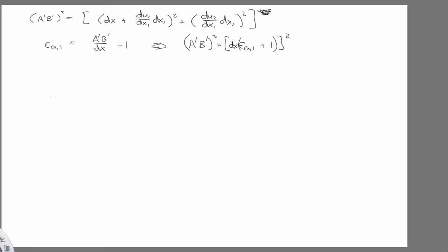And then square both sides. So now I have an equation. So plugging in a prime b prime squared here, plugging in this one here. Then I have an equation I can write down, and I'm going to expand it. So I have dx1 squared plus 2 partial u1 partial x1 dx1 plus the squared terms equals 1 plus 2 epsilon x1 plus epsilon x1 squared.